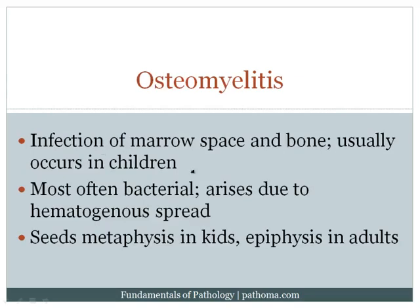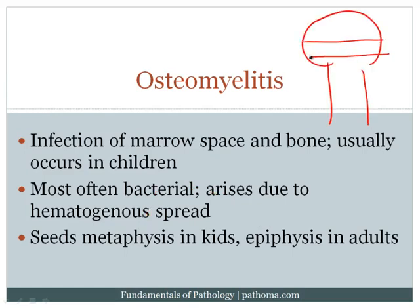Osteomyelitis is infection of the marrow space in the bone, usually occurring in children. It is most often bacterial, with bacteria entering via hematogenous spread. In children, transient bacteremia results in seeding of the metaphysis; in adults, an open wound results in bacteremia that seeds the epiphysis. Recall the bone anatomy: epiphysis, metaphysis, and diaphysis separated by the growth plate. In children it is the metaphysis; in adults, the epiphysis — this distinction is high yield.